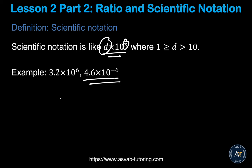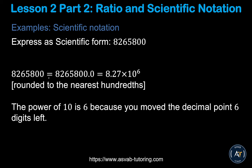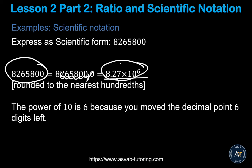Now let's learn how to convert a standard number into scientific notation. Take the number 8,265,800. Place a decimal after the first digit, giving one or two digits depending on your answer options. Then count how many digits come after the decimal: one, two, three, four, five, six — so you write it as 8.27 times 10 to the power 6.